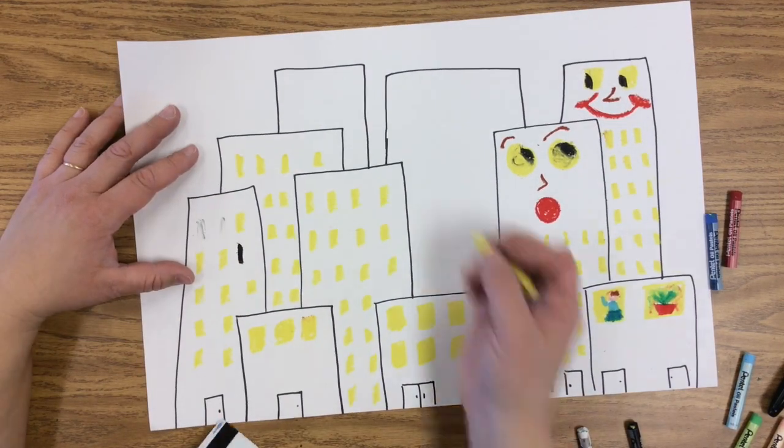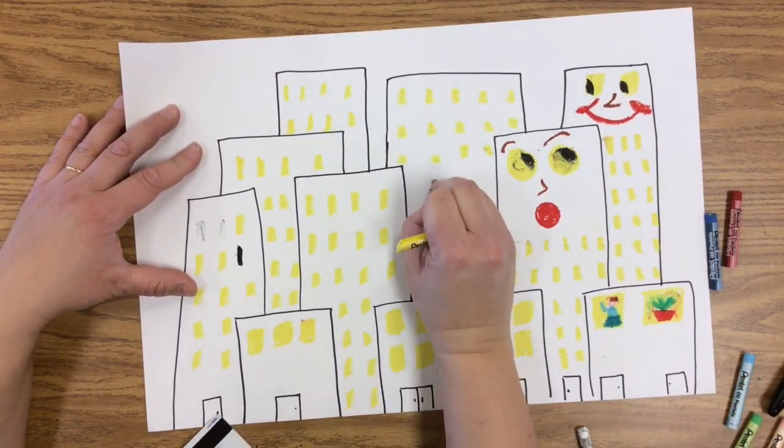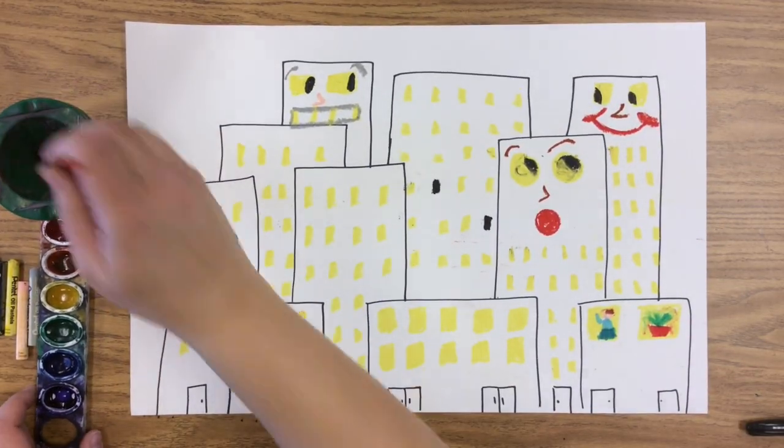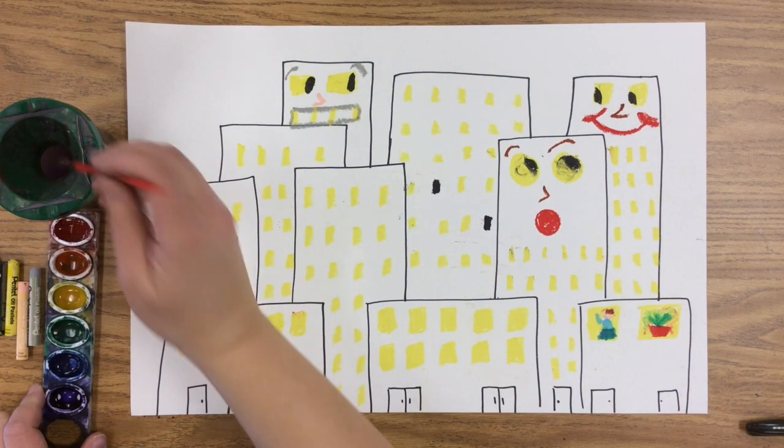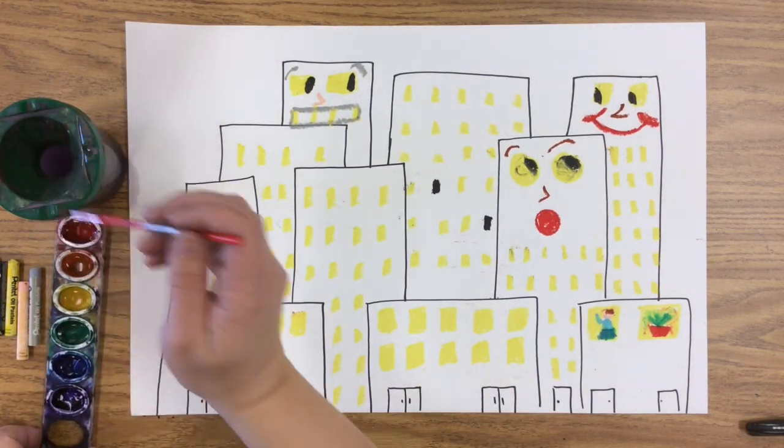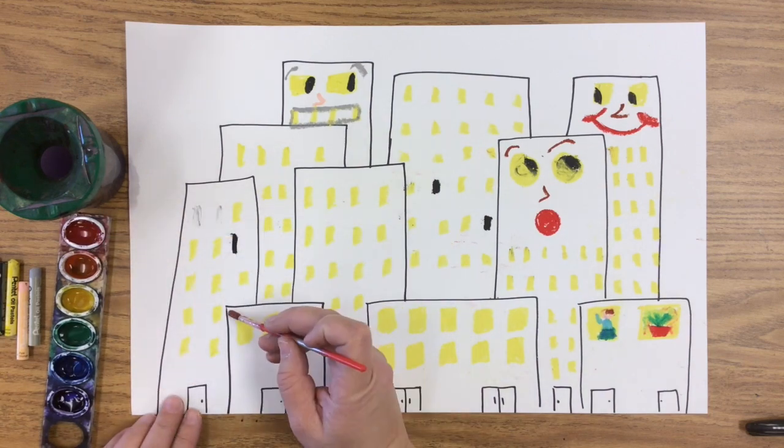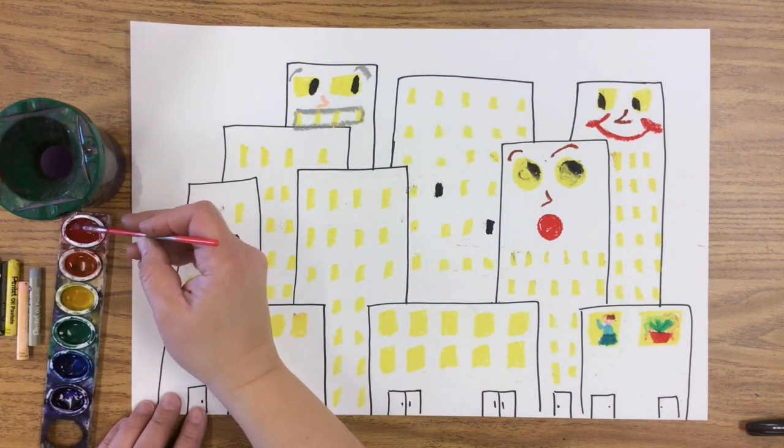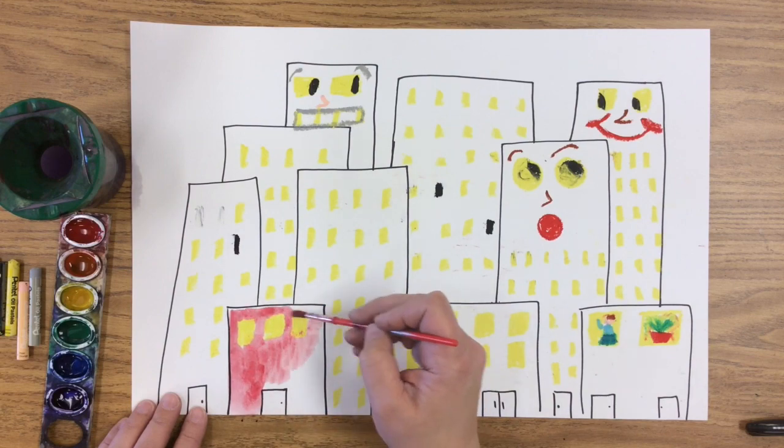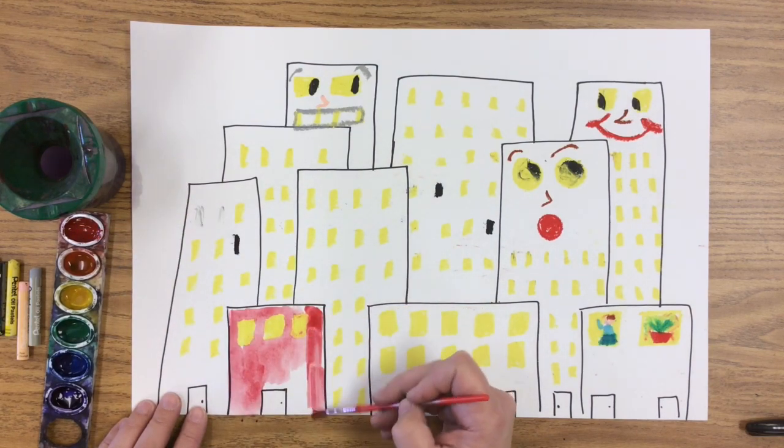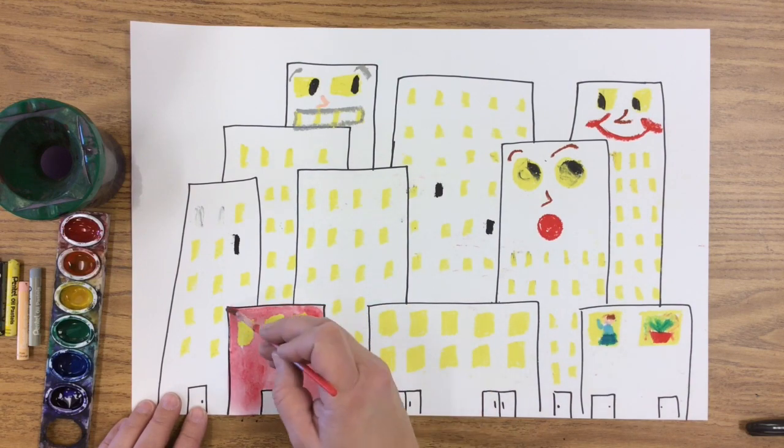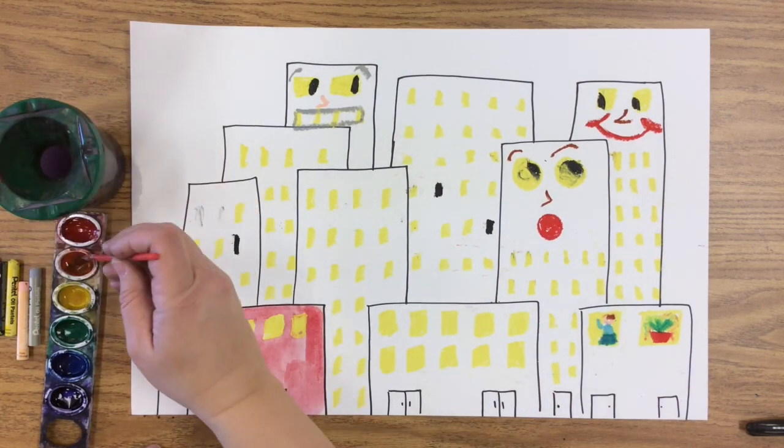Okay, now that we've finished our details with our crayons and our oil pastels, we're going to start with watercolors. Put two dots of water in each watercolor and then you can just start painting. And what's cool about this is it will just paint around the windows, but you can also paint on top the windows and then take a tissue and blot it and the window will stay yellow.